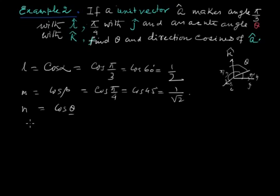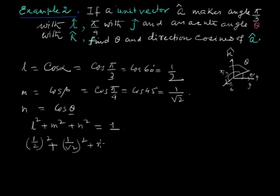But we have a relation - L square plus m square plus n square is equal to 1. So now here the value of L is half, so we put half square, and the value of m is given as 1 by root 2, so we put 1 by root 2 whole square, and then n square is equal to 1. So now half means 1 by 4 plus 1 by 2.